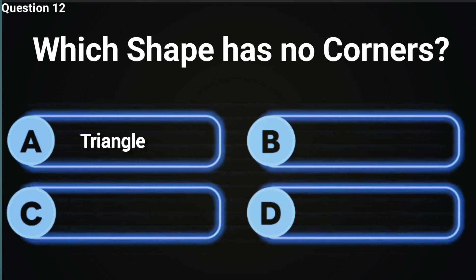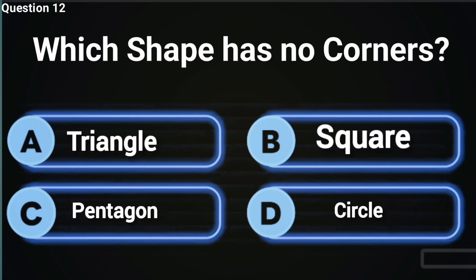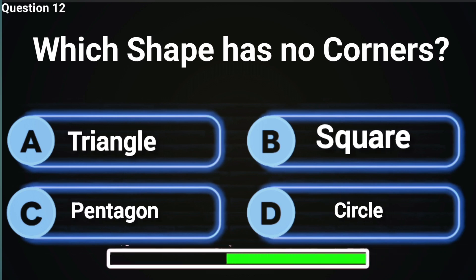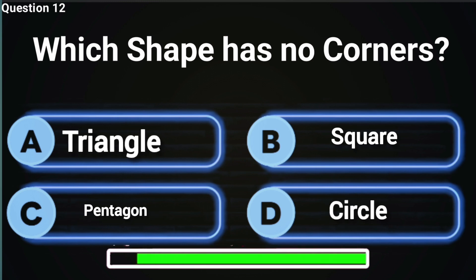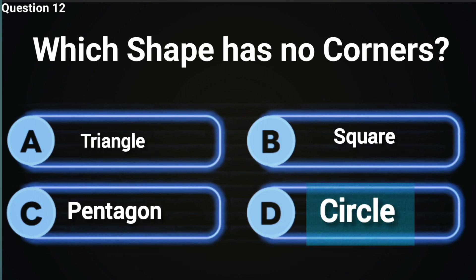Which shape has no corners? No corners, no stress, must be chill. Answer D, circle is correct.